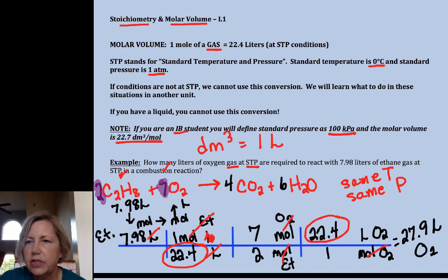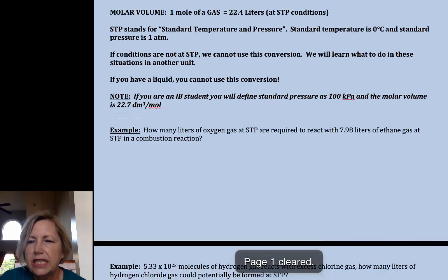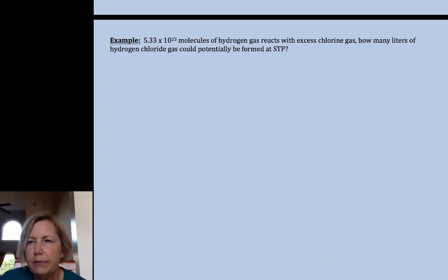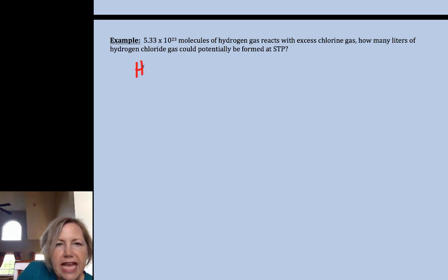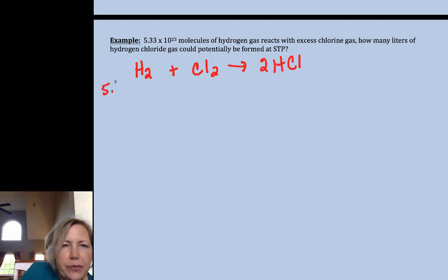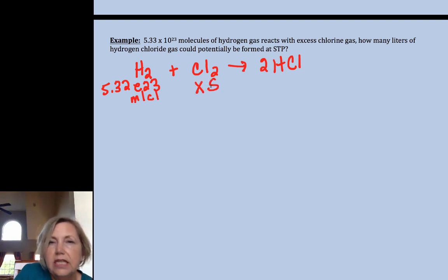Let's very quickly, now that I've kind of given you some of the caveats, let's very quickly move on to one more example. It's going to take a little less explanation. So I've got hydrogen gas plus chlorine gas is going to yield two hydrogen chlorides. I have 5.33 times 10 to the 23rd molecules of hydrogen. I have excess chlorine, that's important, we don't need to do a limiting reagent problem with this. And it says how many liters of hydrogen chloride gas at STP would form.